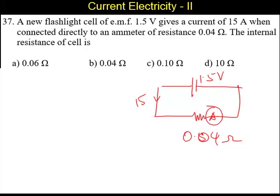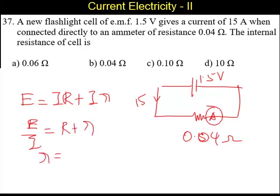Now we can say EMF applied equals I times R plus I times r, where r is internal resistance. We want to calculate r, so E divided by I equals R plus r. Therefore, r equals E divided by I minus R.